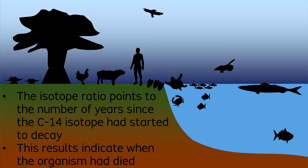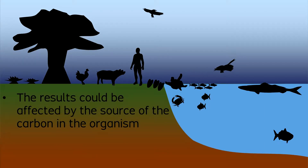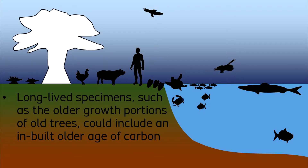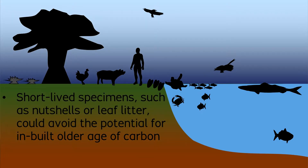The results indicate when a carbon-based organism had died and stopped absorbing new carbon. Radiocarbon results could be affected by the original source of carbon in an organism. For example, long-lived specimens such as the old growth parts of old trees could contain an inbuilt older age of carbon, known as the old wood effect. By comparison, shorter-lived specimens such as nutshells or leaf litter could avoid the potential for inbuilt old carbon.